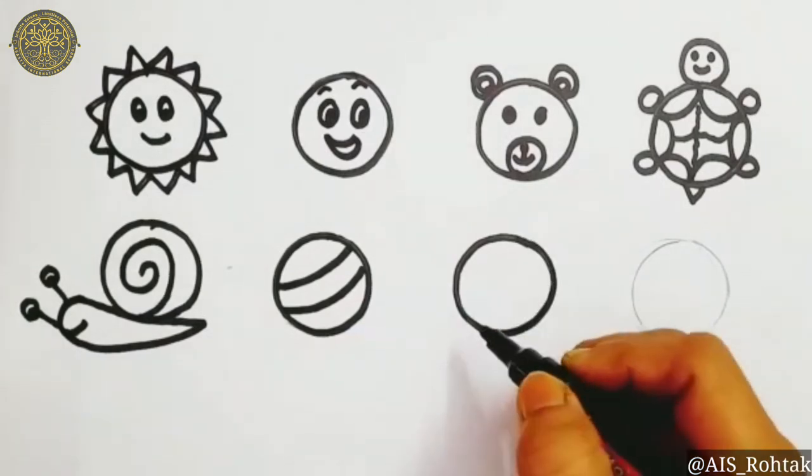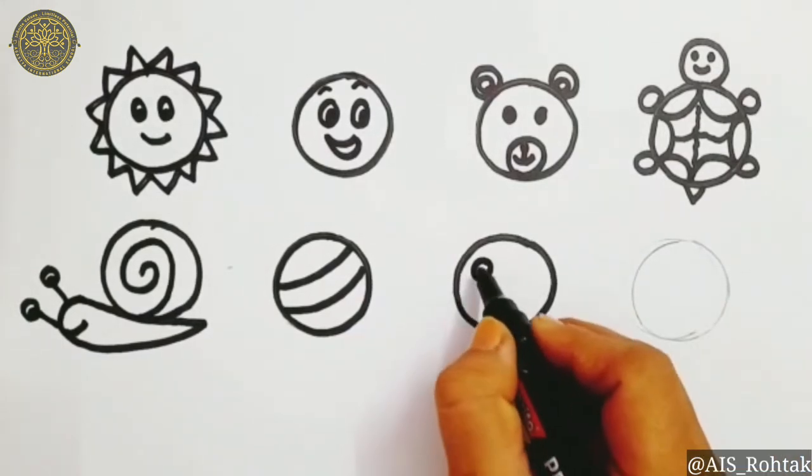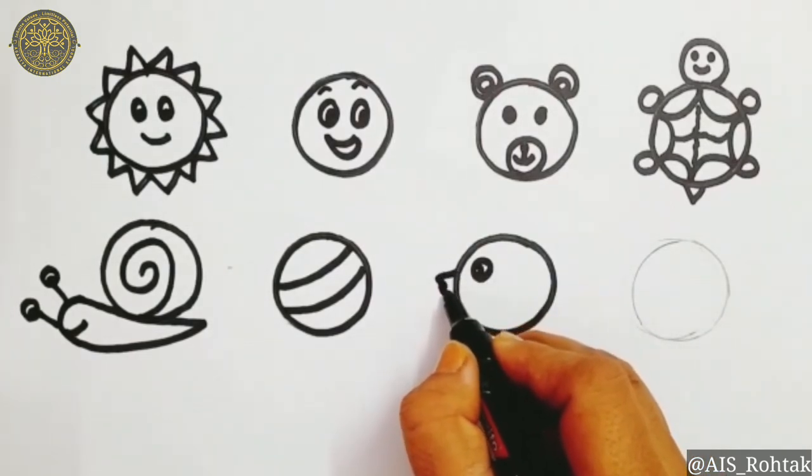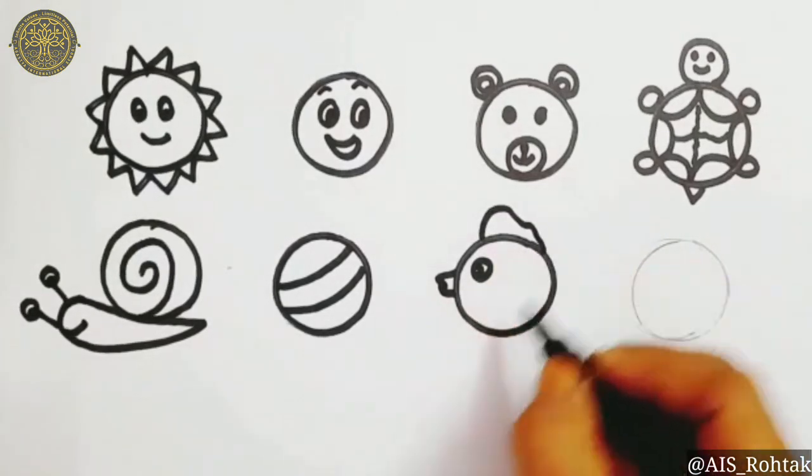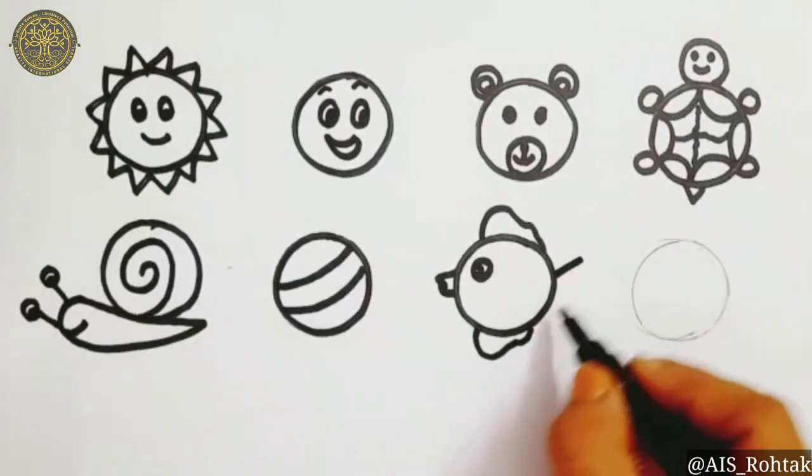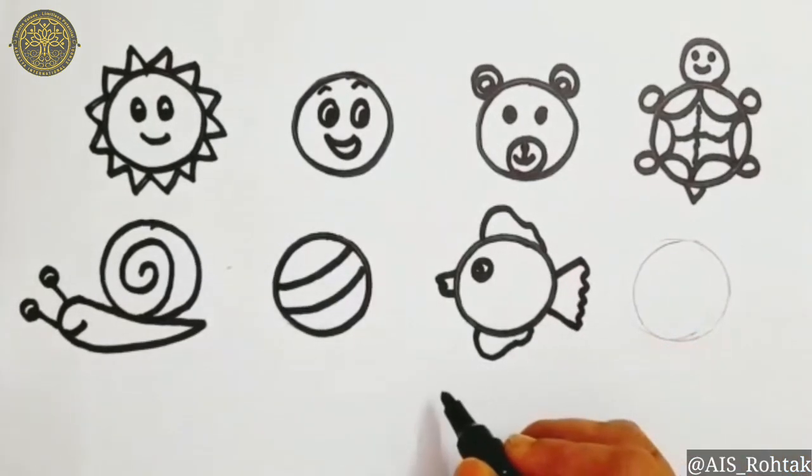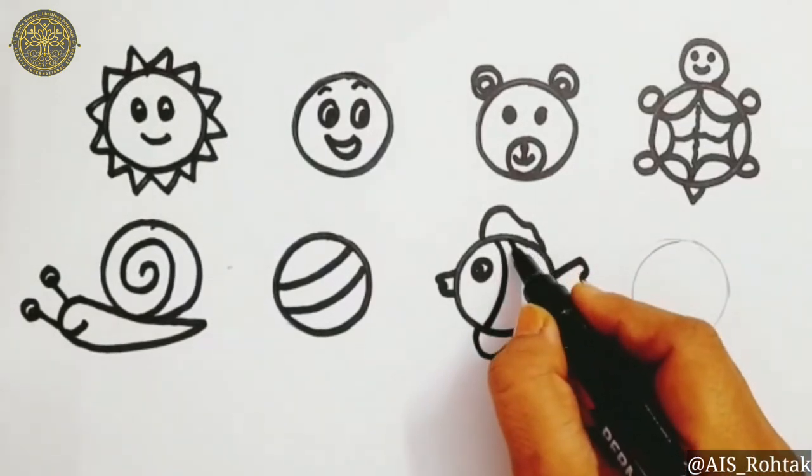Now come to the next circle. Do outline. We are going to draw a fish. So draw one more circle for the eyes. And a W for the mouth. Then draw this type of shape for the wings. One curve in the body. Our fish is ready.